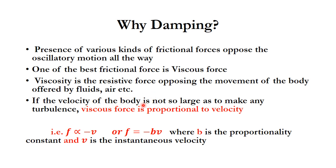If the velocity of the body is not so large as to cause any turbulence in the medium, the viscous force is proportional to the velocity. That is, F is proportional to minus V, or F is equal to minus B times V, where B is the proportionality constant and V is the instantaneous velocity.